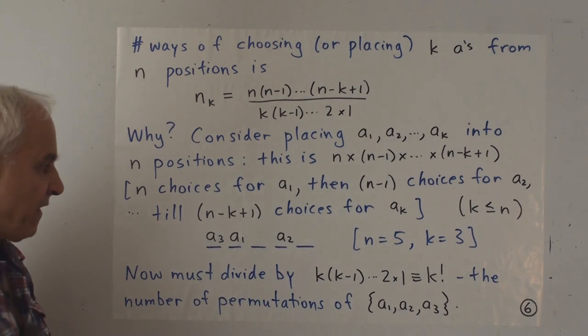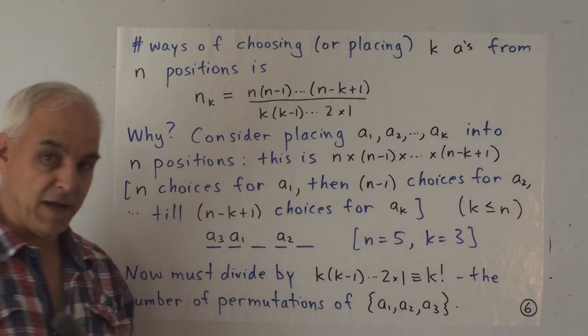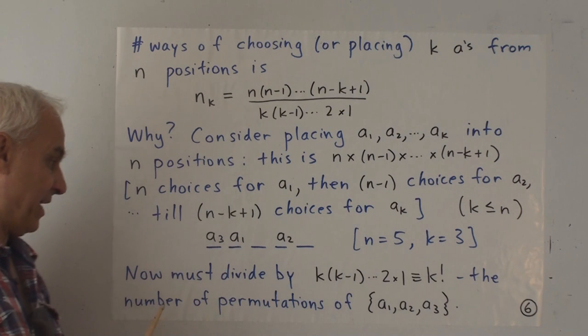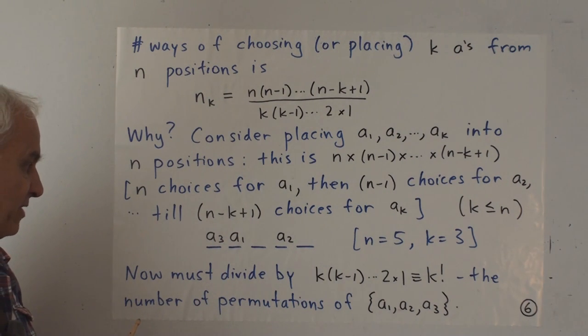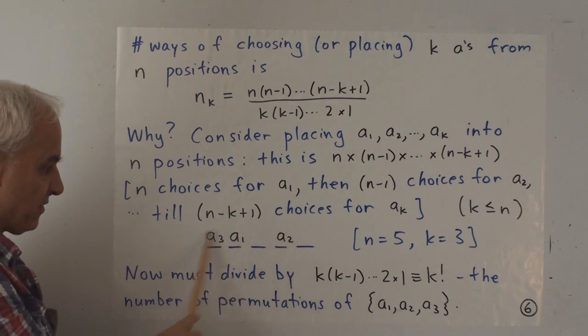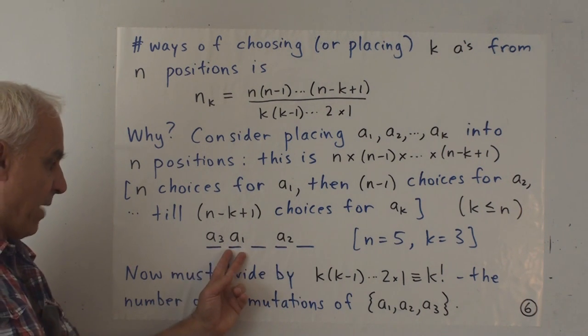All right, so for example, if n is equal to 5 and k is equal to 3, then one possible way of filling the a's into these positions is to put the a1 there, so that you have a choice of 5 for the a1. And then once the a1 is there, well, then you have 4 choices, and maybe the a2 will be there.